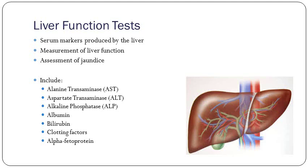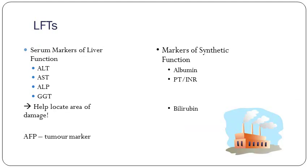Markers of actual liver function are albumin and clotting — those are the two essential markers of how well your liver's doing. If you're looking at someone in liver failure, all their LFTs help lead you to diagnosis, but in terms of actually knowing how well the liver's operating, you want to worry about albumin and clotting. Then you've got AFP, which is a tumor marker, and bilirubin, which doesn't really fall into any category.